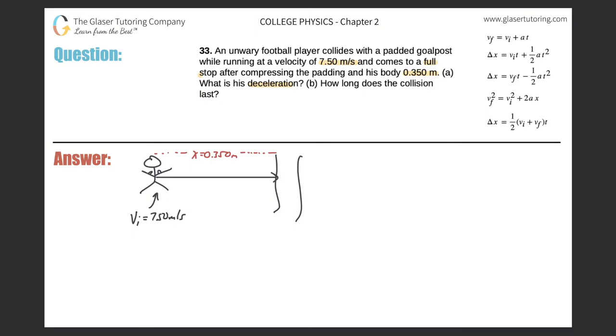And it tells us finally he comes to a stop. So it's another piece. So at the end, this is the final, it's 0 meters per second. Now what we have to do is we have to calculate his deceleration. Or in other words, we have to calculate his acceleration, and it should work out to be negative.